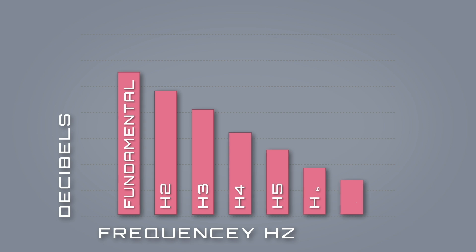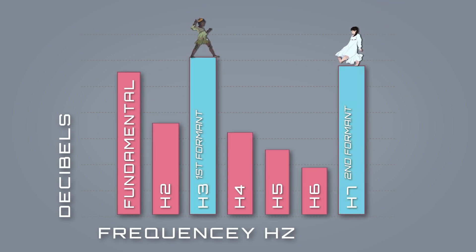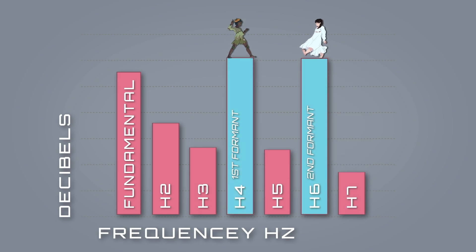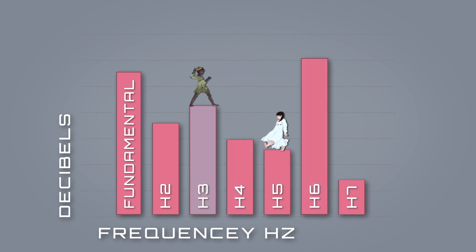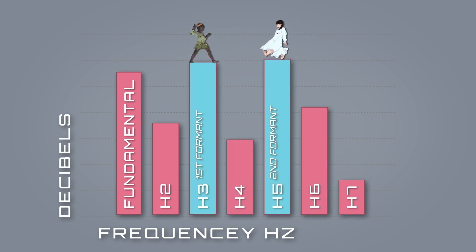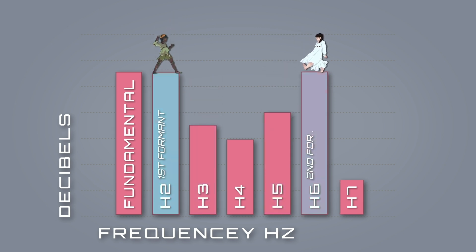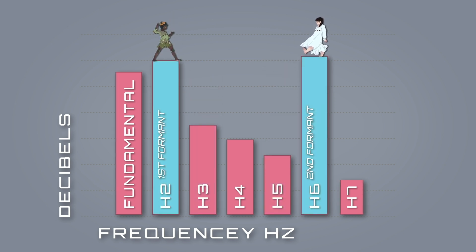But the first two — the ones I like to call Peter Pan and Wendy — are pretty important because, besides coloring our voice, they also show us the difference between vowels. So that is the theory of it: the simplified map of your voice.